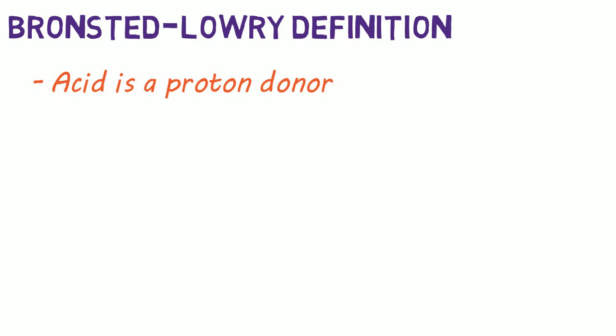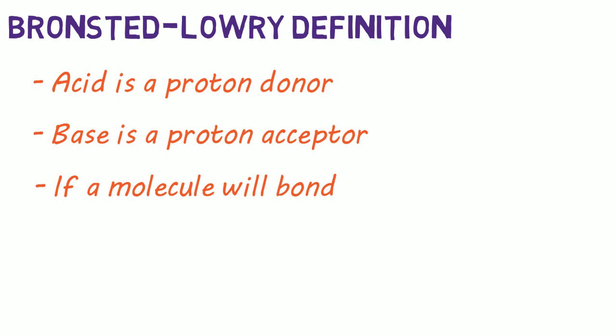With the Bronsted-Lowry definition, we only refer to what happens to the hydrogen ion, or proton. So the acid is a proton donor, much like an Arrhenius acid, but the base is defined as a proton acceptor. So if there's a compound that will bond a free proton, it is a Bronsted-Lowry base.